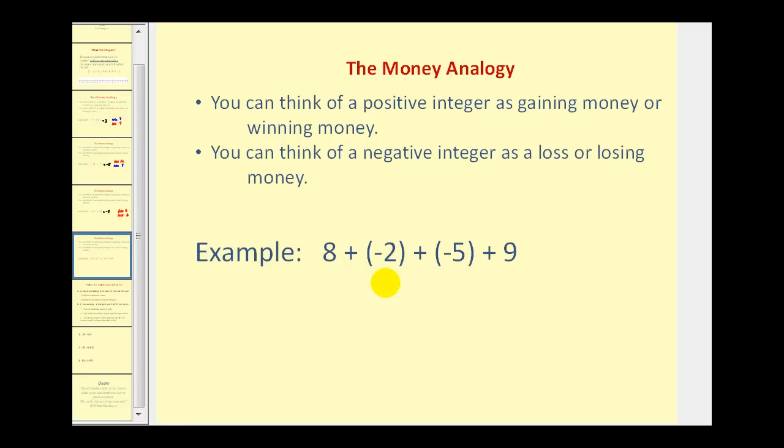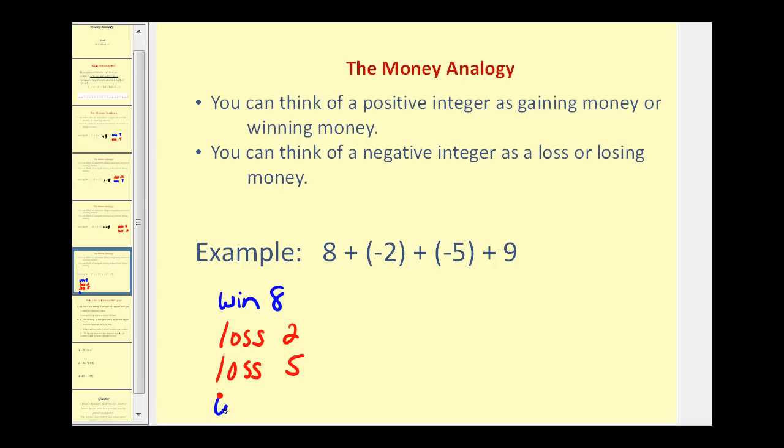Let's take a look at one more example where we have a sum of four integers but we'll use the same analogy. So we have 8 plus negative 2 plus negative 5 plus 9. So we have a win of 8 dollars. We have a loss of 2 dollars. We have another loss of 5 dollars. And then we have a win of 9 dollars. So let's work our way through this. If we win 8 dollars and then lose 2 dollars we would still have 6 dollars. So if we have 6 dollars and then we lose 5 dollars we'll still have 1 dollar. And then if we have 1 dollar and then we win 9 dollars, 1 plus 9 would give us a total of 10 dollars. So this sum would be positive 10.